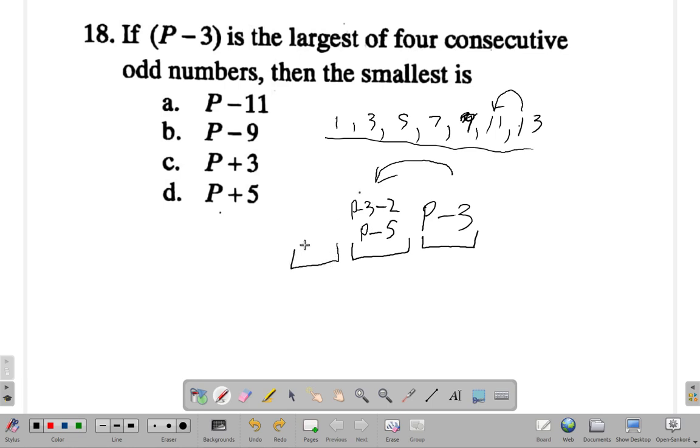Now it's four consecutive odd numbers that they're talking about. I have only two so far, I want the third one. The one that came before P minus 5 is P minus 5, and as I said before, to go back you need to subtract 2. What is negative 5 minus 2? It's negative 7.